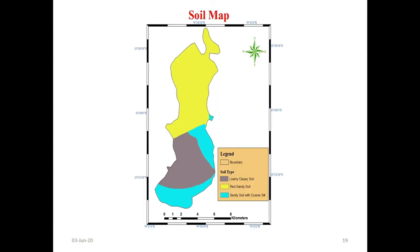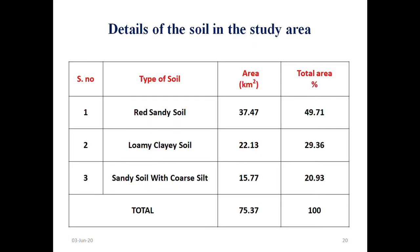This is the soil map which the area has been classified into three soils: calcareous lake soil, red sandy soil, and sandy soil with coarse salt. These are also around 50% with red sandy soil and the rest of the area.